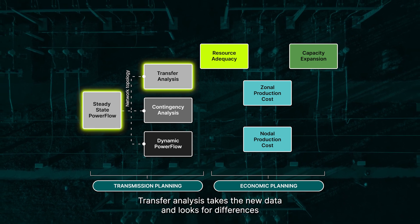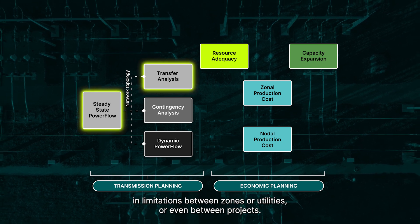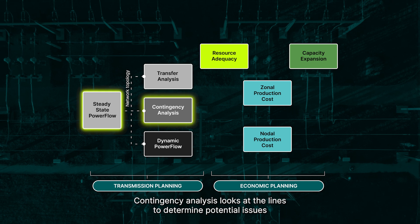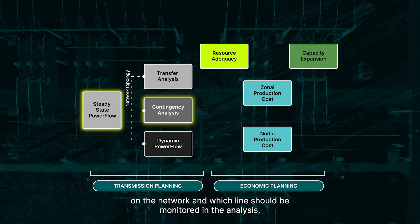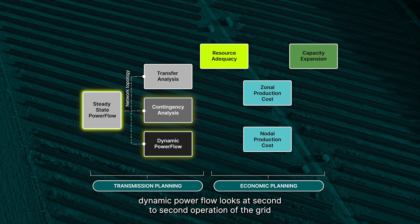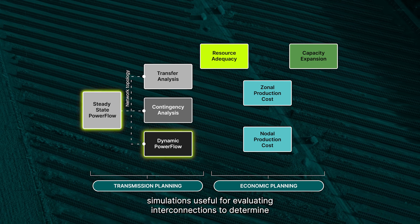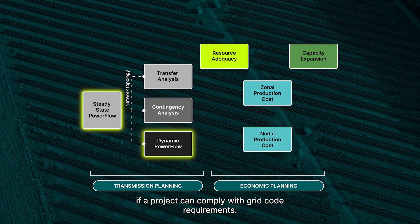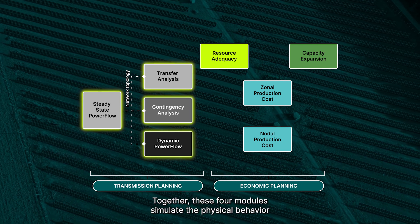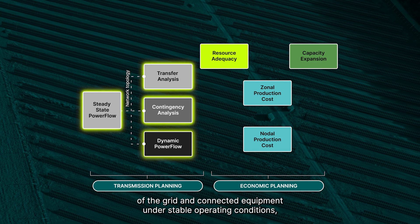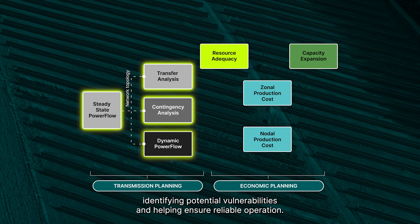Transfer Analysis takes the new data and looks for differences in limitations between zones or utilities, or even between projects. Contingency Analysis looks at the lines to determine potential issues on the network and which lines should be monitored in the analysis. Dynamic Power Flow looks at second-to-second operation of the grid simulations, useful for evaluating interconnections to determine if a project can comply with grid code requirements. Together, these four modules simulate the physical behavior of the grid and connected equipment under stable operating conditions, identifying potential vulnerabilities and helping ensure reliable operation.